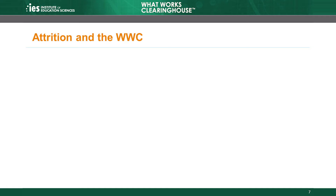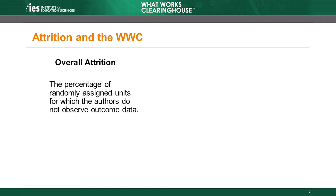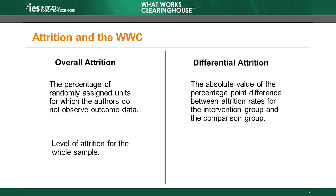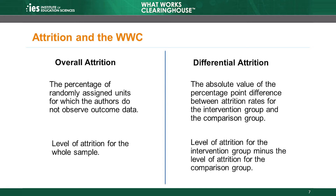The WWC focuses on two different types of attrition: overall and differential. Overall attrition is the percentage of randomly assigned units for which the researchers do not observe outcome data — you can think of it as the level of attrition for the whole sample. For example, the overall attrition rate would be 25% if 75% of all sample members remained in the study. Differential attrition is the absolute value of the percentage point difference between attrition rates for the intervention group and the comparison group. For example, if 35% of the intervention group dropped out along with 15% of the comparison group, the differential attrition rate would be 20 percentage points (35 minus 15). For the WWC attrition standard, both overall and differential attrition are important.